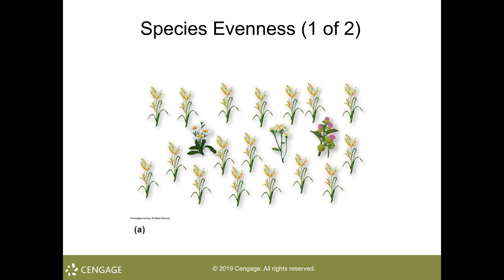Species richness is the number of species in that community, and the way you determine that is by counting the species of interest. In the tropical rainforests and even the coral reefs, each of which are extremely high in their species richness. Contrasting such would be those isolated islands and mountaintops, which will exhibit lower species richness.